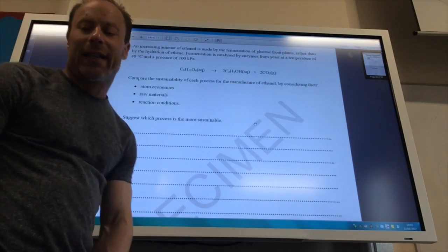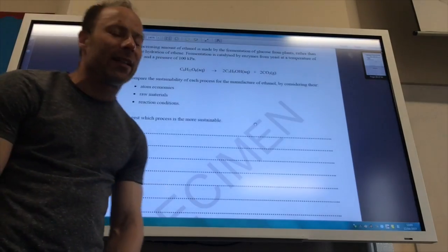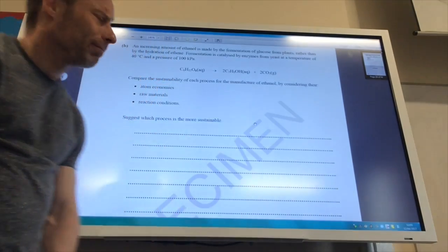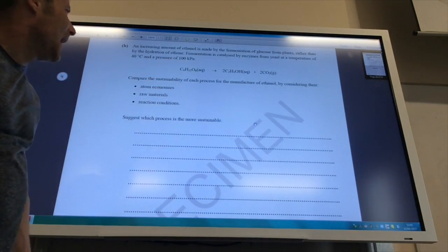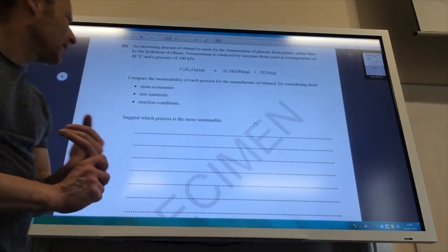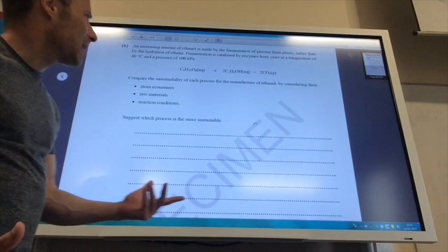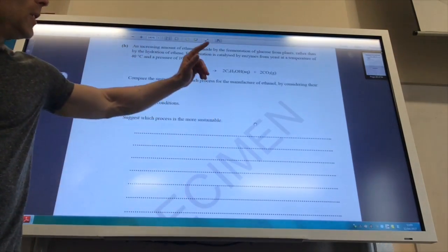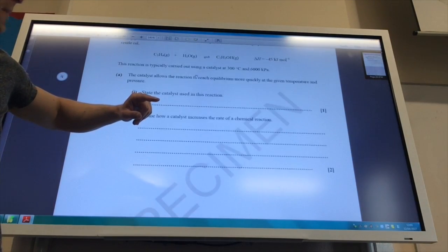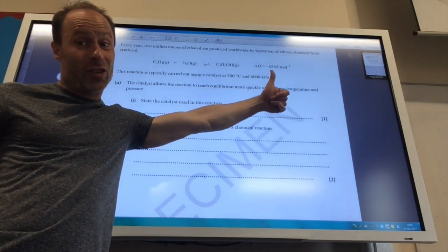Right, so this is a bit of a common sense one in a way. A lot of the time we're now getting ethanol from fermentation of glucose. And they've given me the equation here. And it wants me to compare this reaction to the one that we just looked at. So we need to look at atom economy, raw materials, and also reaction conditions. Okay, so let's have a look. Atom economy, first of all. If you look at the atom economy of this one, the first one that we looked at up here, this has got an atom economy of 100%. It only makes one product that we want. So that's got to be good. Atom economy, well hey, good start for that one.